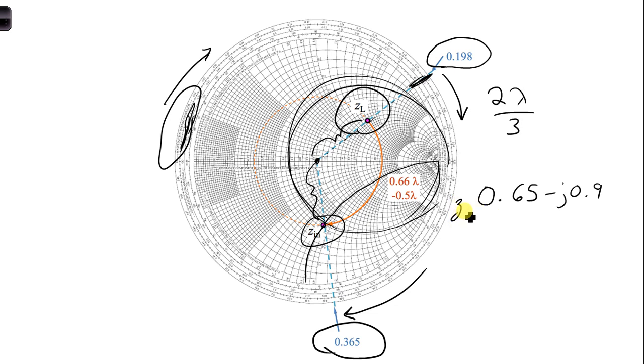So this is little z-in. So don't forget, we have to still denormalize. And so we would take little z-in, multiply this time to denormalize by z-not. And that will give us the true physical z-in, capital Z-in value. So we would take 0.65 minus j 0.9, multiply times 50. And our final answer is 32.5 minus j 45 ohms.